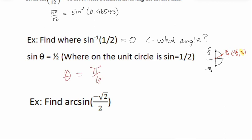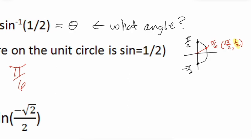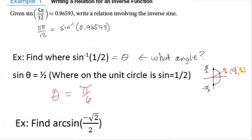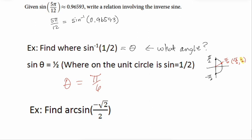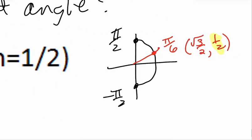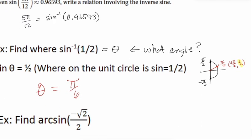We're just going backwards on the unit circle — asking what angle measure gave me a sine value of 1/2. The answer is π/6. Knowing your unit circle by heart and having a picture of it on your iPad would be very helpful as we do these problems.